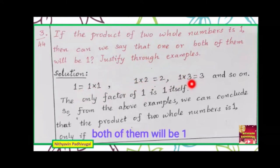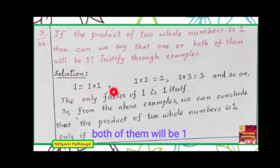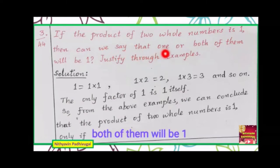The cases to consider are 1×1, 1×2, 1×3, and so on. Of all these, only 1 times 1 gives you 1 as the result. 1 times any other number gives you that number itself, not 1. So the only case giving a product of 1 is 1×1. The only factor of 1 is 1 itself. Therefore, from the above examples, we conclude: if the product of 2 whole numbers is 1, then both of them must be 1.